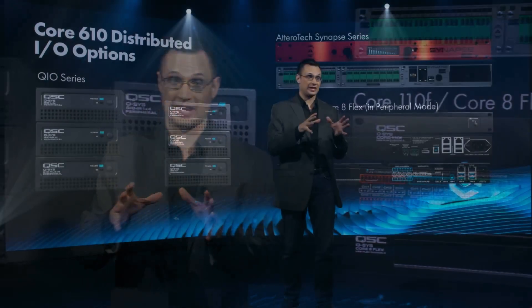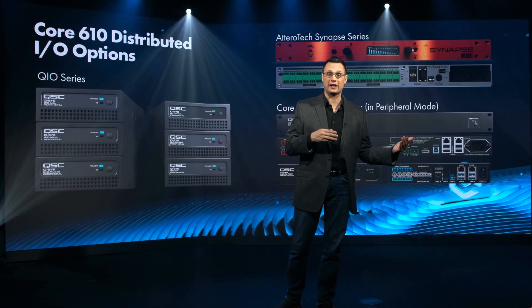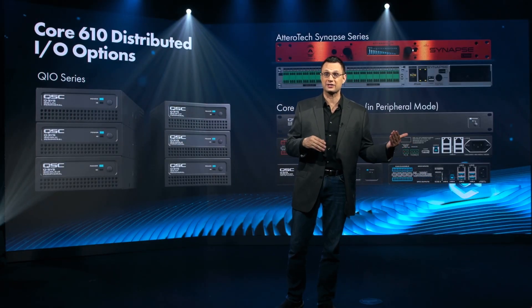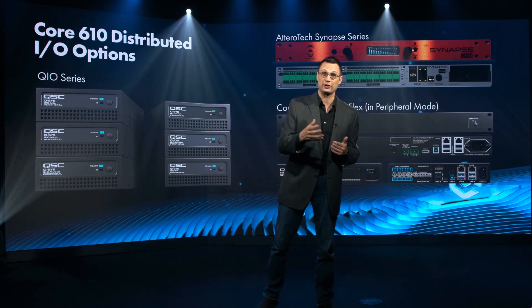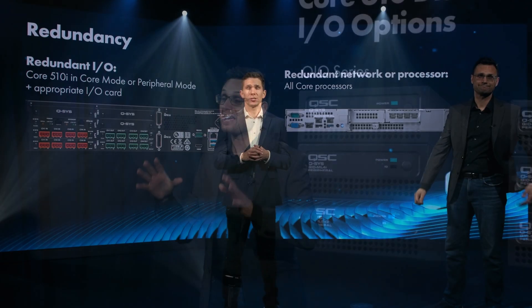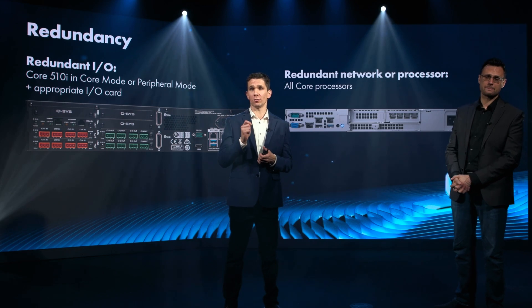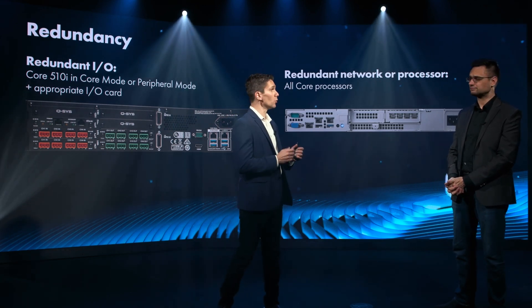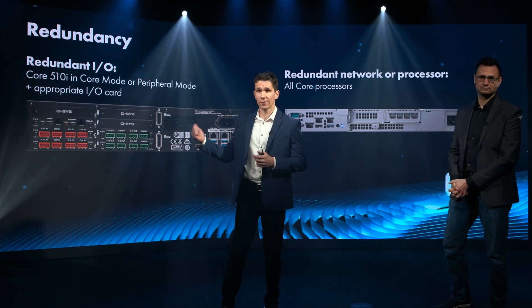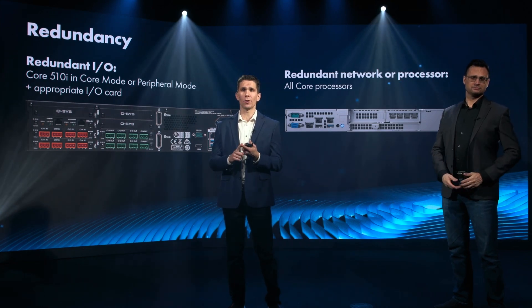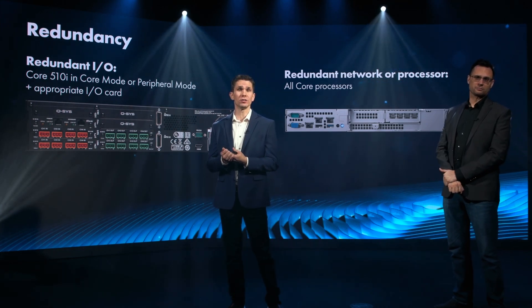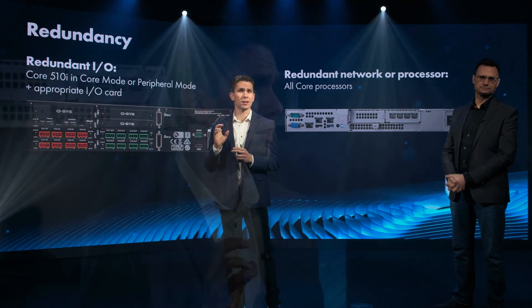If you pair the 610 with any of our I/O devices — the Q.I.O. series of devices — you get all the analog inputs and outputs that you could need. So if you need audio redundancy on your cores, then you would choose the 510. Whether that's in core mode or peripheral mode, you would choose that associated I/O card and achieve your audio I/O redundancy.